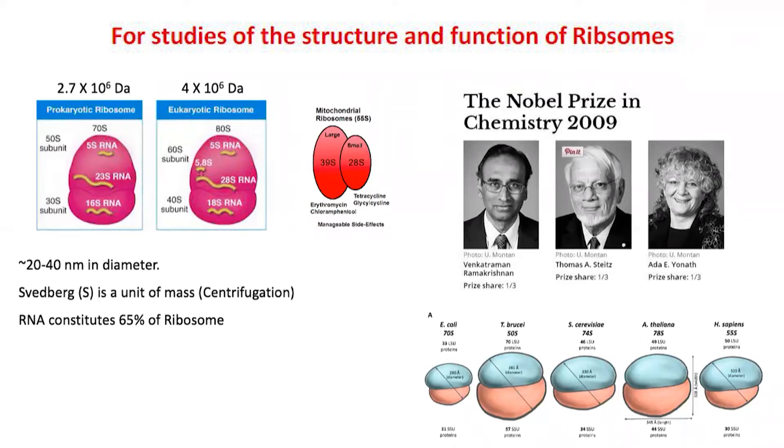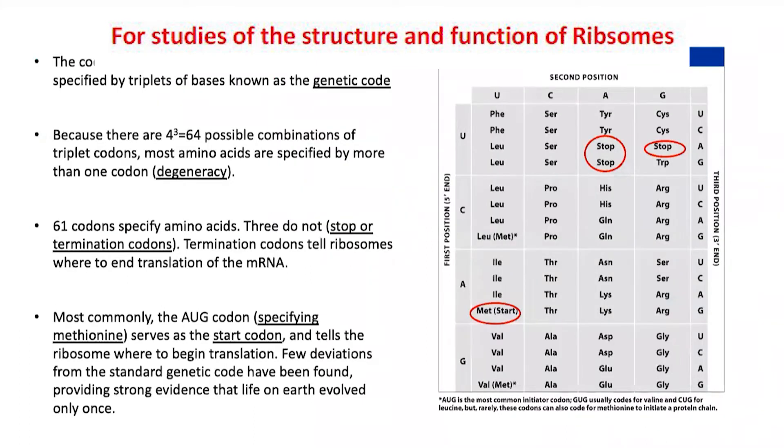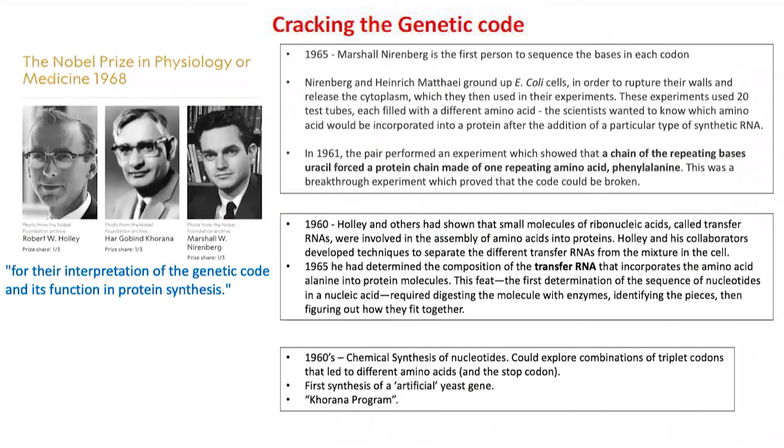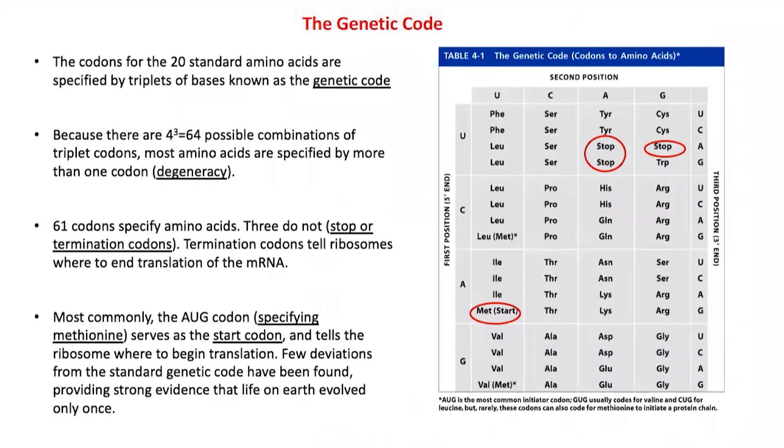There are variations in the ribosomes which allow drugs to target prokaryotic ribosomes but not affect eukaryotic ribosomes. Because of these differences, drugs can be used against bacteria in our body without harming the body's cells.